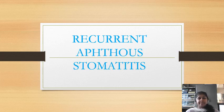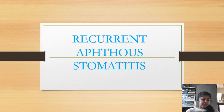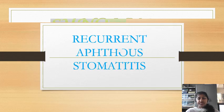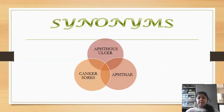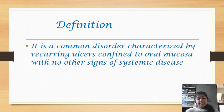Aphthous Stomatitis is a common oral lesion which is seen in the general population, and most of us have experienced this lesion also. Synonyms for Aphthous Stomatitis are Aphthous Ulcer, Canker Sore, and Aphthae. This Aphthous Ulcer can be defined as a common disorder characterized by recurring ulcers confined to the oral mucosa with no other signs of systemic disease.